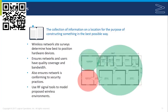A site survey is a collection of information about a site for the purpose of constructing something in the best possible way. In the context of wireless, a wireless site survey determines how to design the network and where to place hardware. It ensures quality coverage and bandwidth and helps ensure the network conforms to security practices. These tools use radio frequency signals to model the proposed wireless environment, verifying adequate signal strength and ensuring the signal doesn't extend too far beyond intended boundaries.